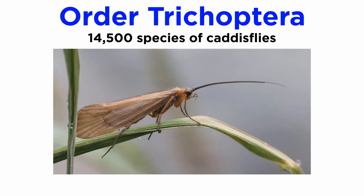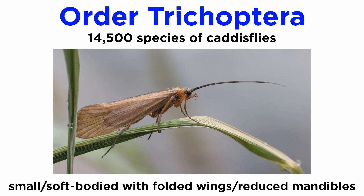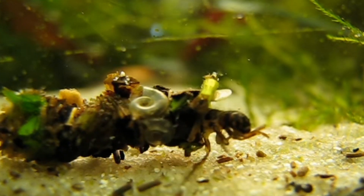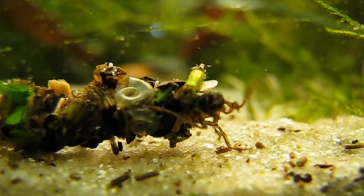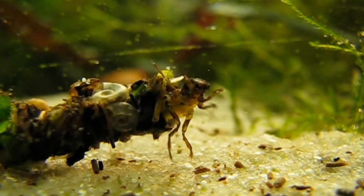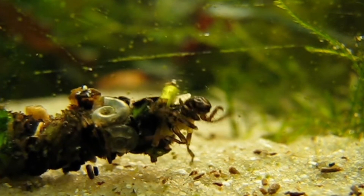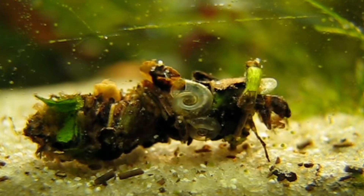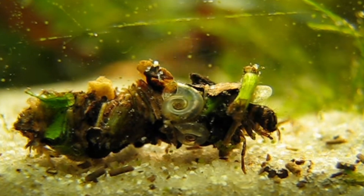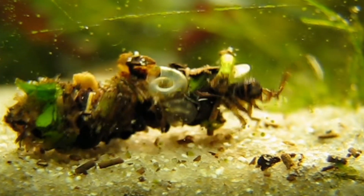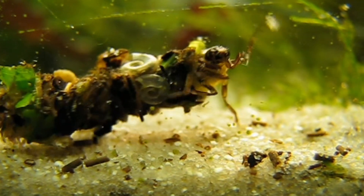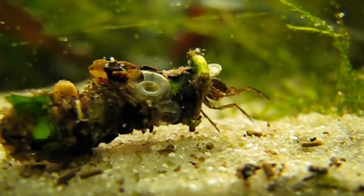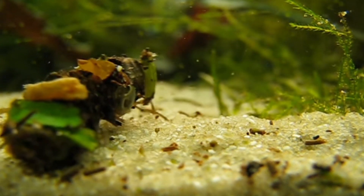Order Trichoptera includes more than 14,500 described species of caddisflies. As adults they are small and soft-bodied, with folded wings and reduced mandibles. The aquatic larvae of many species construct cases of leaves, sand, gravel, and bits of shell or plant matter that they bind together using secreted substances like silk. Their larvae are widespread in streams, rivers, lakes, ponds, and temporary pools of water, and like those of the mayflies, stoneflies, and dragonflies, are indicators of good water quality since they die out in polluted areas.